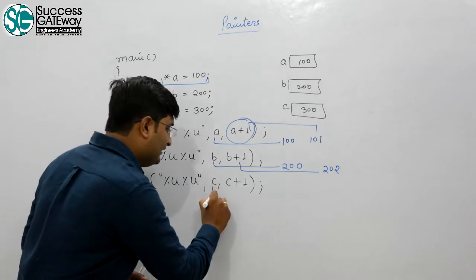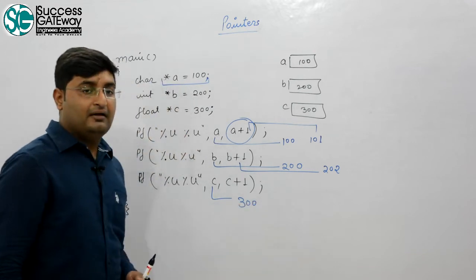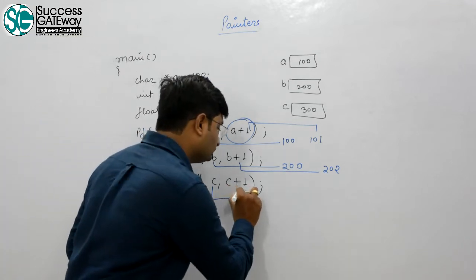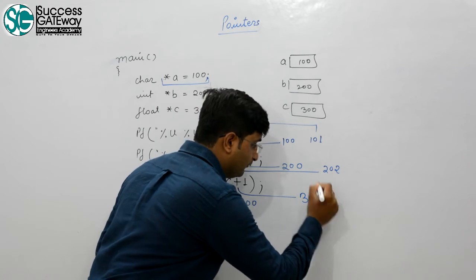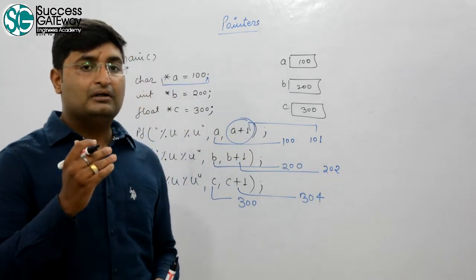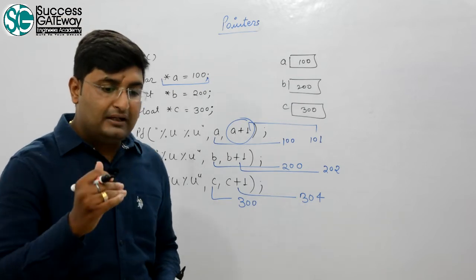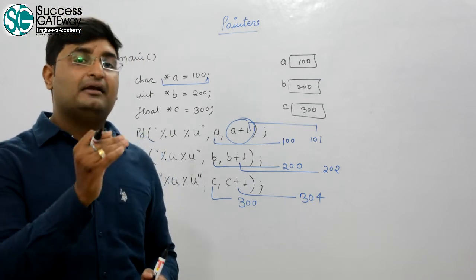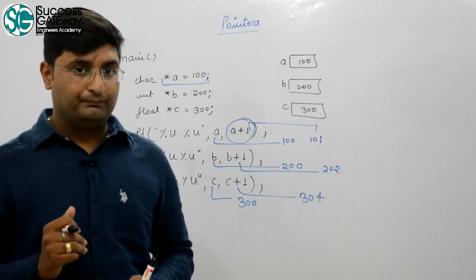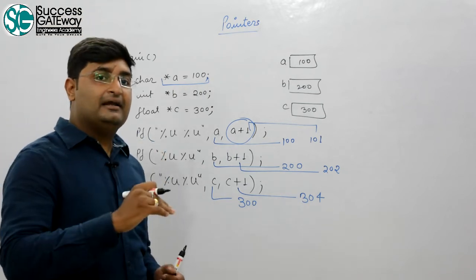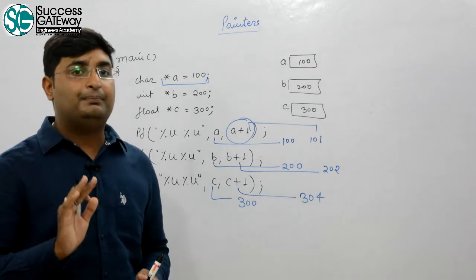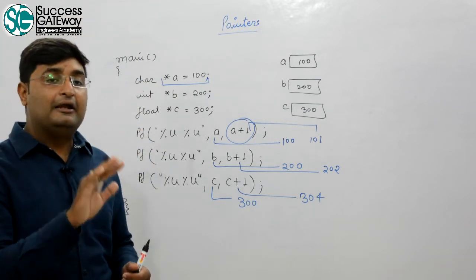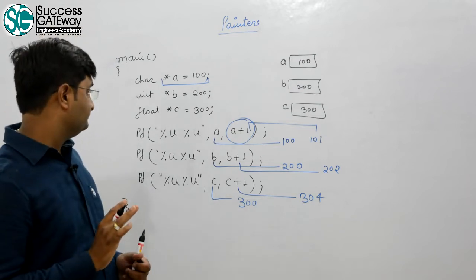c is a float pointer and float size is 4 bytes, so c + 1 = 304. The rule is: when a constant is added to a pointer variable, the increment is by the size of the pointer's data type. Similarly, subtraction of a constant with a pointer is also allowed and the result depends on the pointer type.